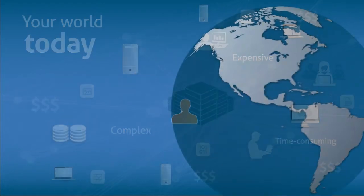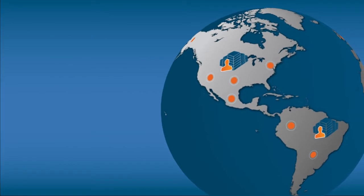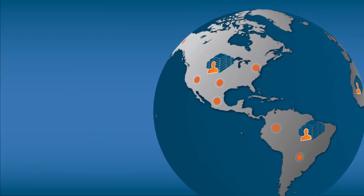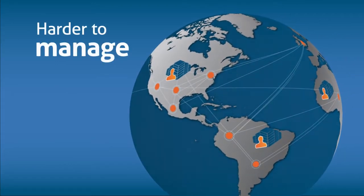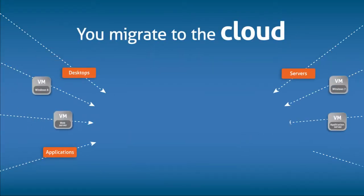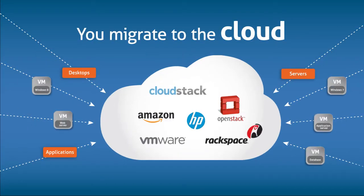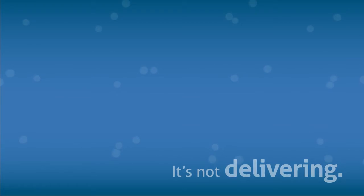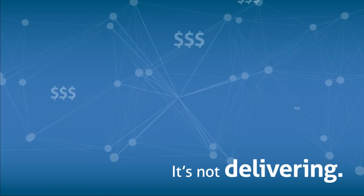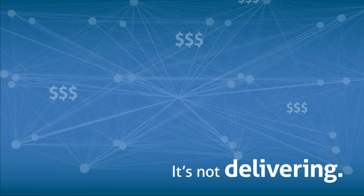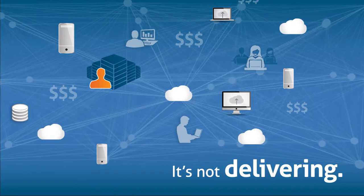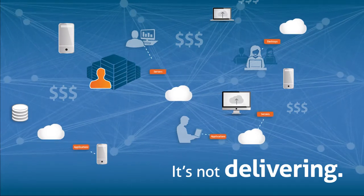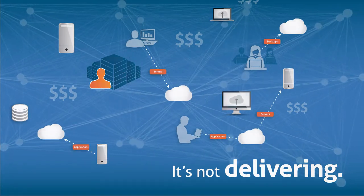If your environment includes multiple locations, additional applications, or other departments, your infrastructure becomes harder to manage. You migrate workloads to various cloud platforms to make things easier, but the cloud isn't quite delivering as expected. And now you've got physical infrastructure and virtualized infrastructure and virtual workloads in multiple clouds.